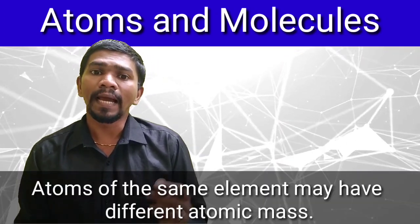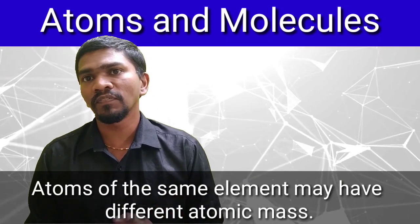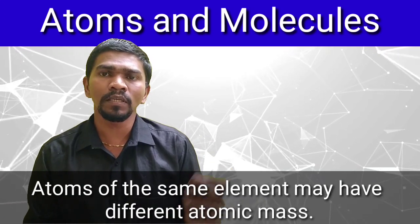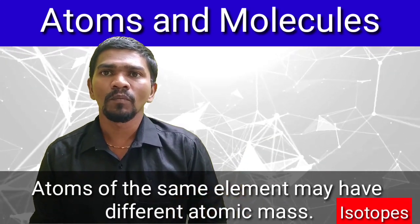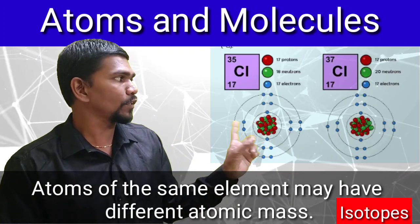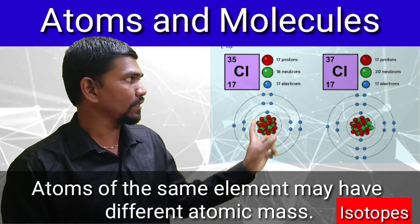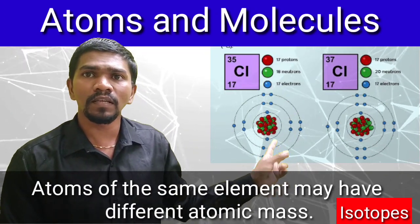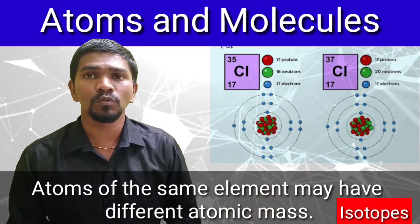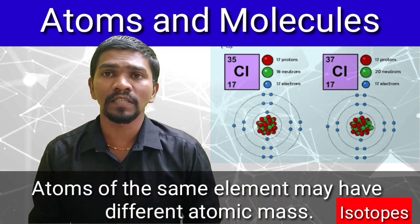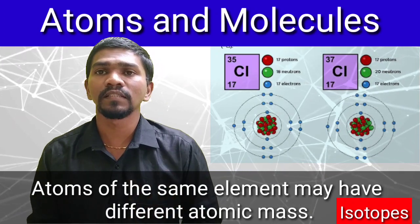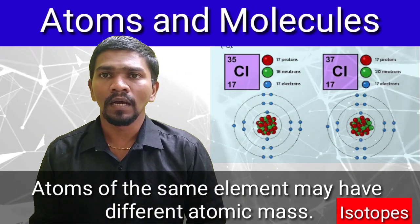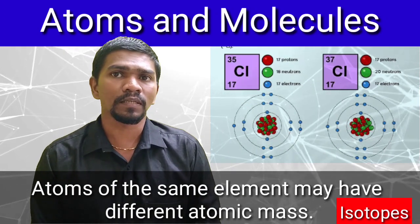The next point is: atoms of the same element can have different atomic masses, because atomic mass is determined by the number of protons and number of neutrons. For example, chlorine: Cl-17-35 and Cl-17-37. The variation in mass is because of the difference in the number of neutrons, not protons. So the protons are the same, the atomic number is the same, but the atomic mass varies. This is called isotopes.